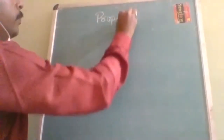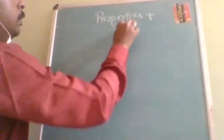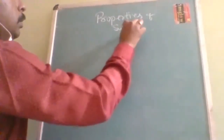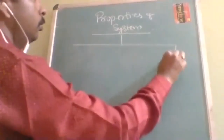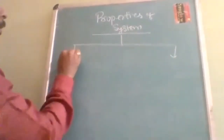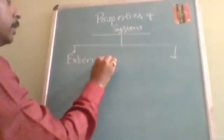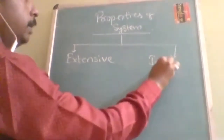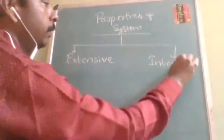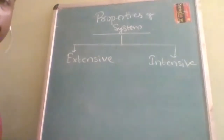Now we are going to explore the properties of a system. Properties are divided into two types. The first one is extensive property and the second one is intensive property.